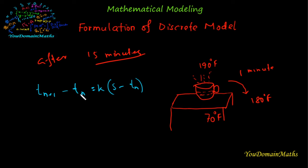Here, T(n) is the temperature of coffee after N minutes, and S is the temperature of the room. So S minus T(n) is the difference between the object temperature and its surrounding temperature. And T(n+1) minus T(n) is the difference between temperatures at two time steps.